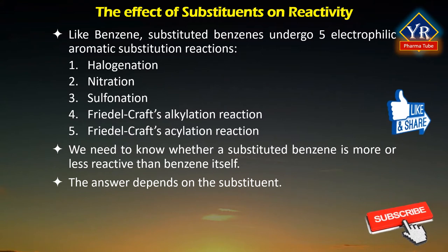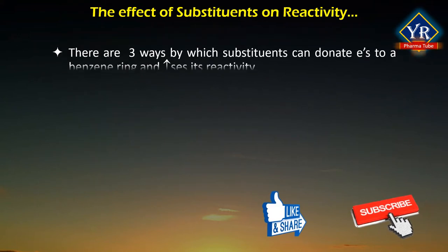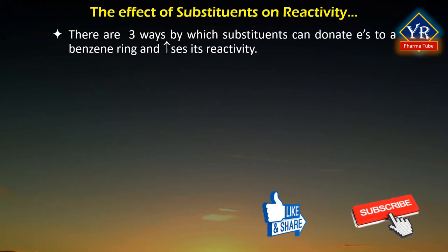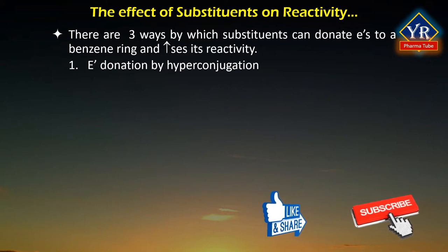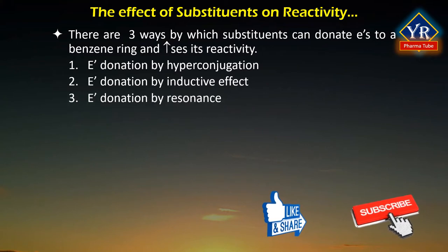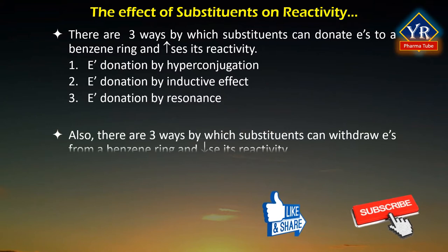Some substituents make the ring more reactive toward electrophilic aromatic substitution than benzene and some make it less reactive. There are 3 ways by which substituents can donate electrons to a benzene ring and increase its reactivity: 1. Electron donation by hyperconjugation, i.e., alkyl groups having at least one hydrogen atom on the alpha carbon. 2. Electron donation by inductive effect, i.e., the presence of alkyl groups. 3. Electron donation by resonance, i.e., the key atom should have at least one lone pair of electrons.